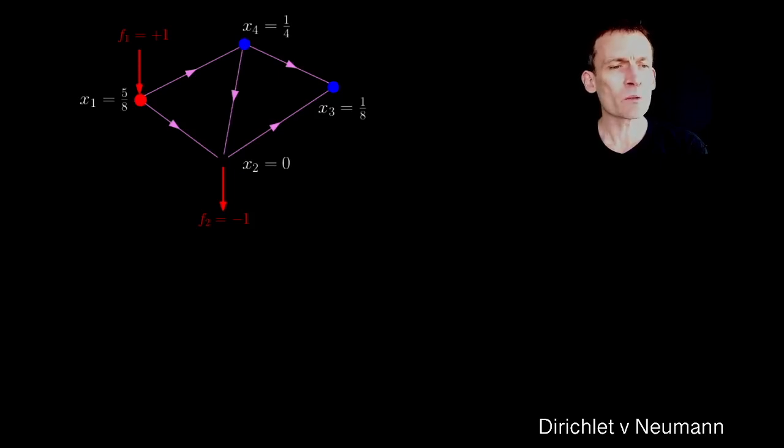I specified that there was a unit divergence of the current at node 1, so a unit current into the circuit at node 1, and a unit current out of the circuit, or divergence minus 1, at node 2.